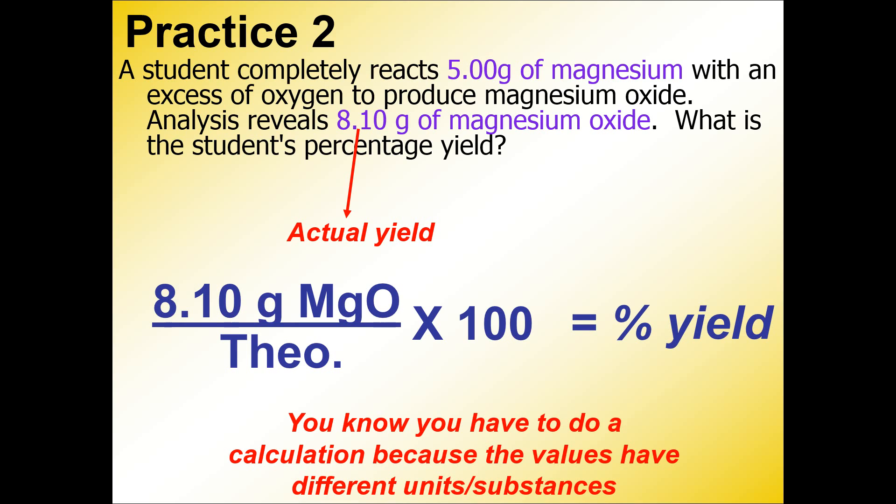Let me show you what we have so far in this percent yield problem. We have an actual yield in the numerator. We do not have a theoretical yield yet—we are going to calculate that on the next slide. The little red note tells you that you have to do a calculation because the values have different units or substances.